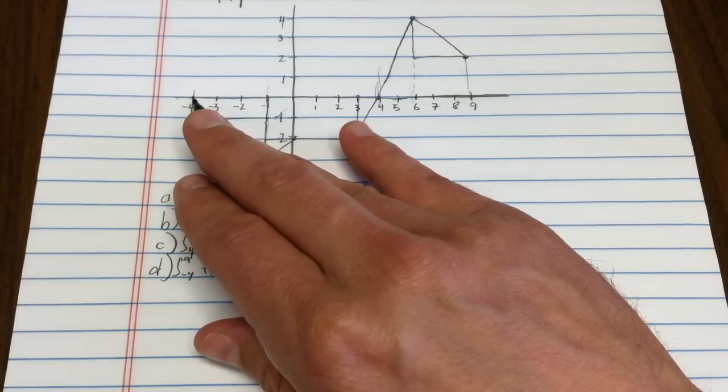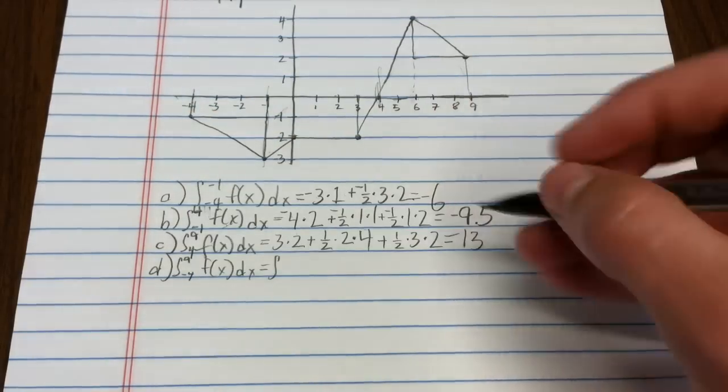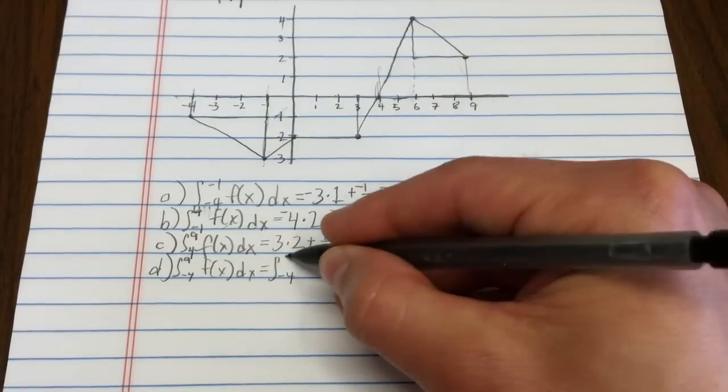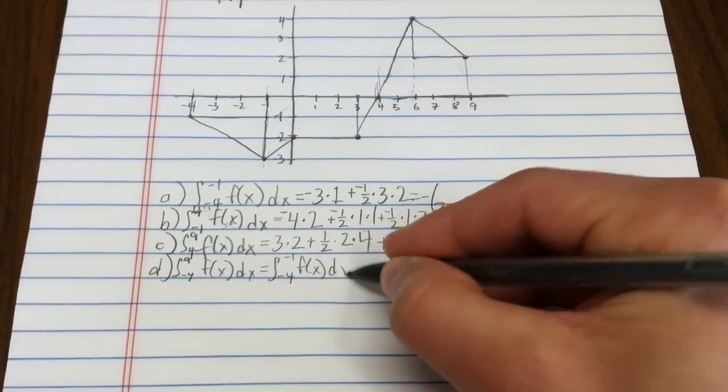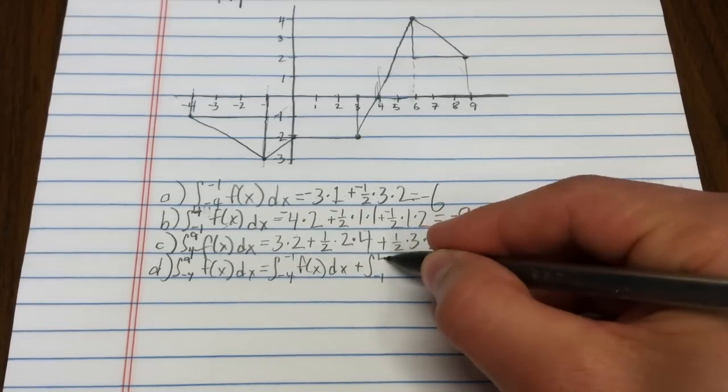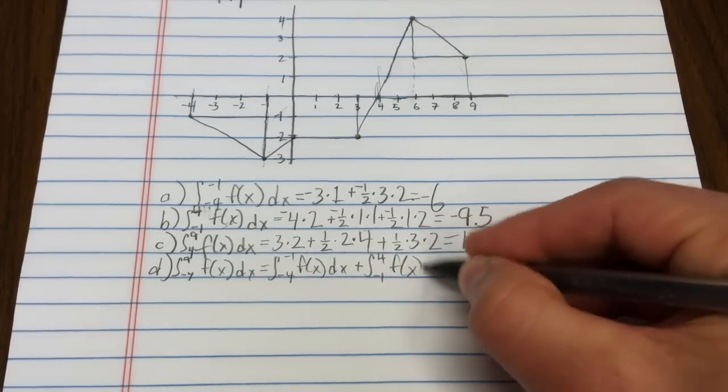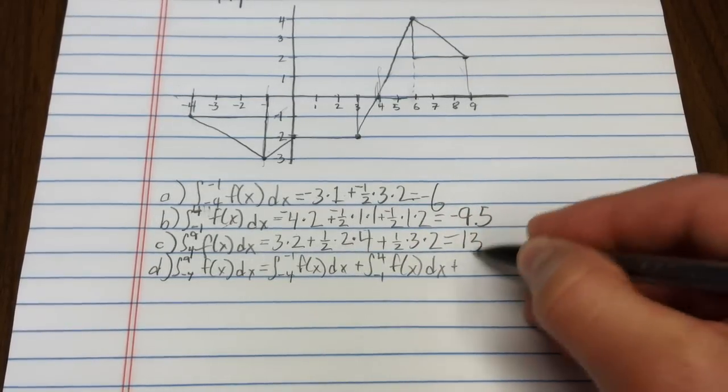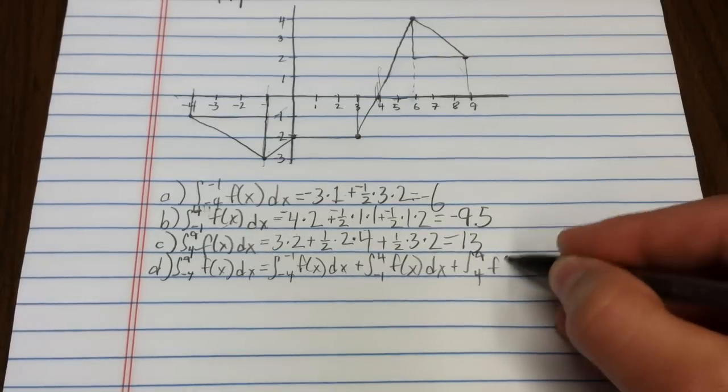So finding the area, the signed area, from negative 4 up to 9 is the same as going from negative 4 to negative 1, plus the integral from negative 1 to 4, plus the integral from 4 to 9. Isn't that exciting?